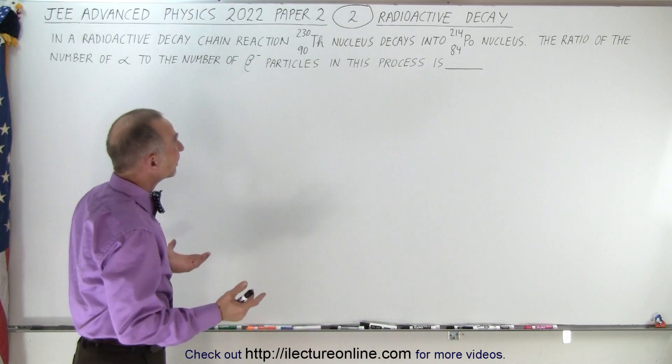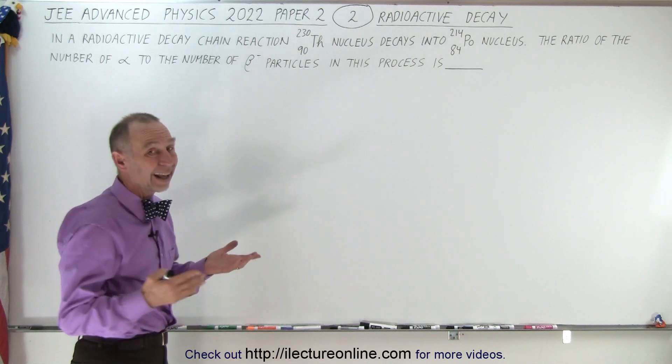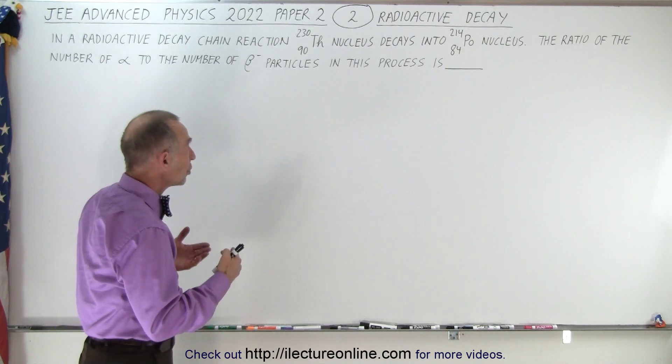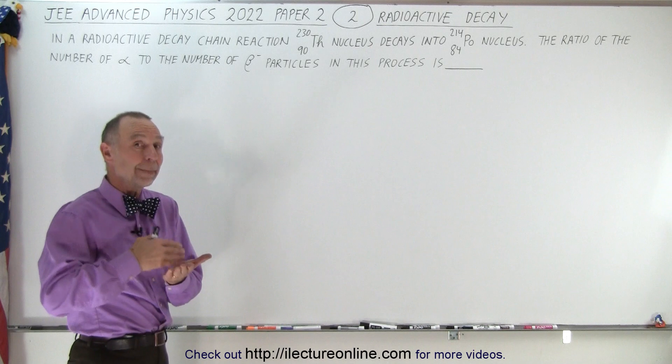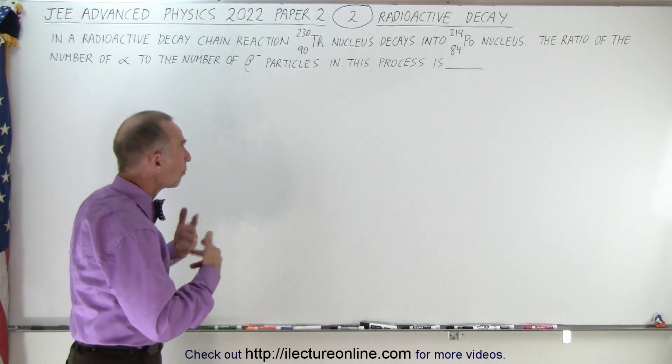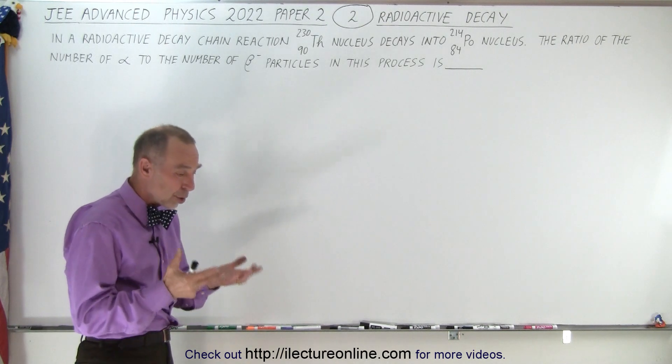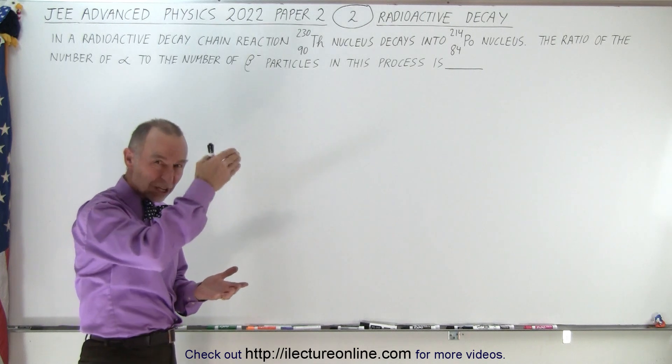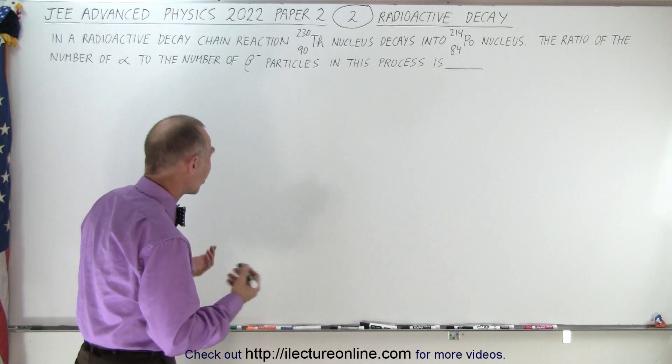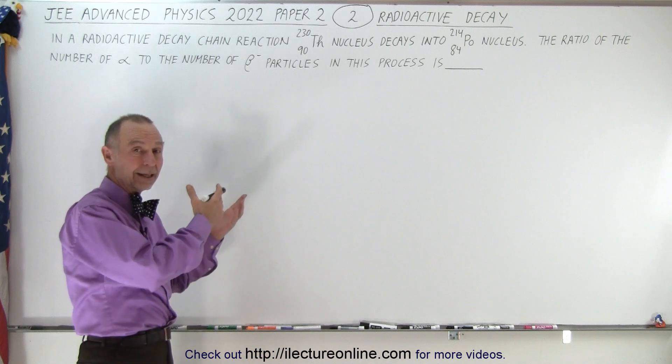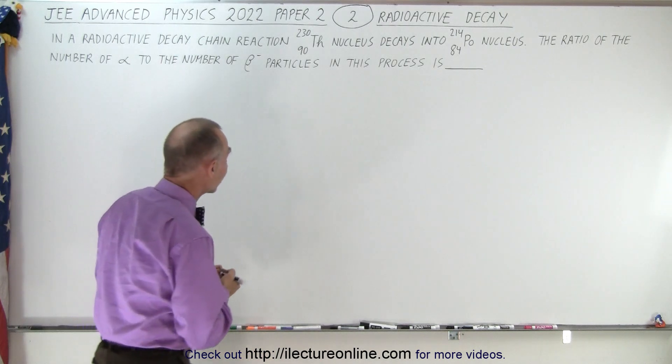But do you know how many beta decays there are? Because in a beta decay there's no change in the total mass of the nucleus. So you really need to know the decay process, the chain reaction of the decay process. So let's put it down and see if you can memorize this, it always comes in handy.